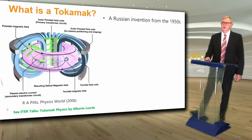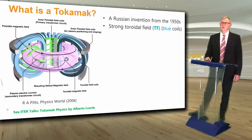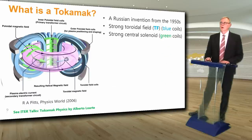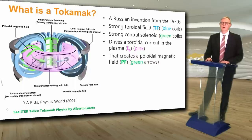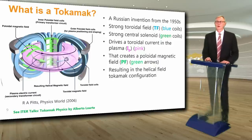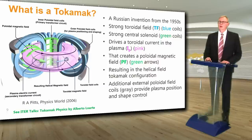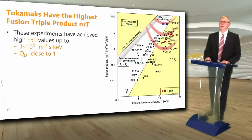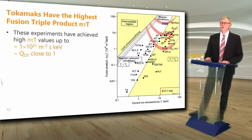A tokamak is a Russian invention from the 1950s to hold a hot plasma. It has a strong toroidal field produced by the blue coils, a strong central solenoid shown by the green coils, which drives a toroidal current shown in pink that creates a poloidal magnetic field shown by the green arrows, resulting in a helical tokamak configuration. There are additional poloidal field coils shown in gray that provide plasma position and shape control. We use capital R to define the major radius of a tokamak. Tokamaks have achieved the highest fusion triple product N-tau-T of any controlled fusion device.